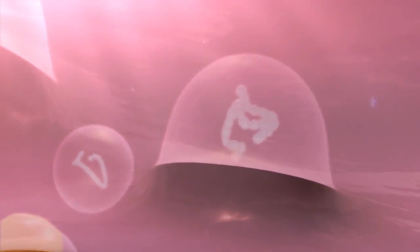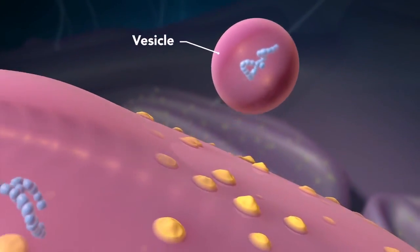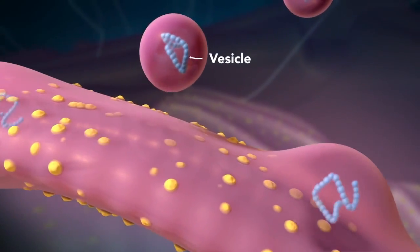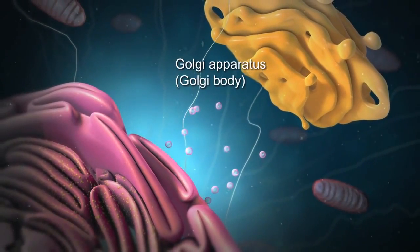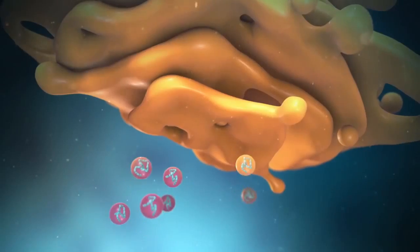Proteins and other materials emerge from the endoplasmic reticulum in small vesicles, where the Golgi apparatus, sometimes called the Golgi body, receives them.